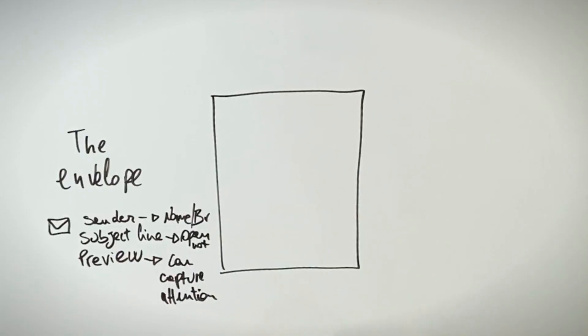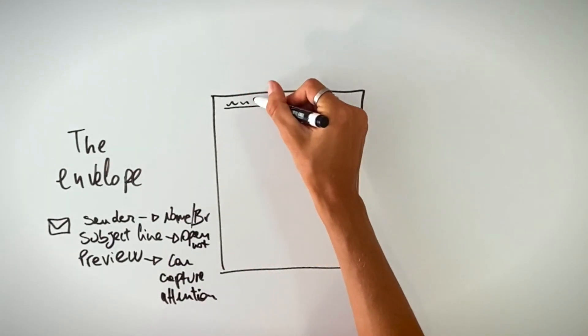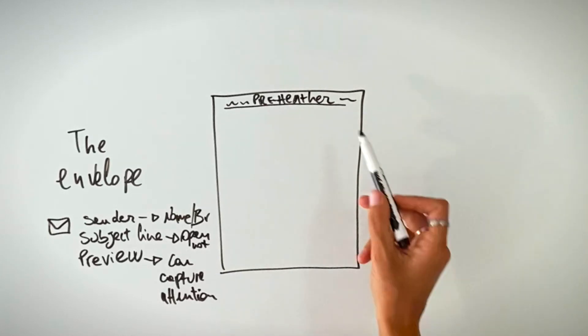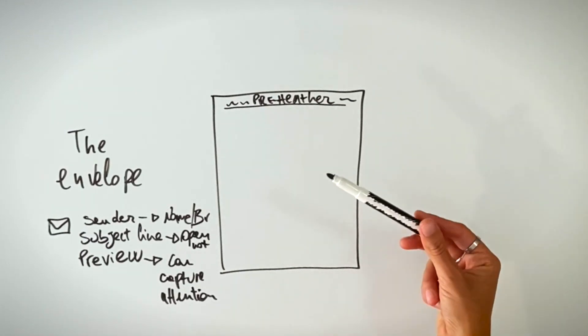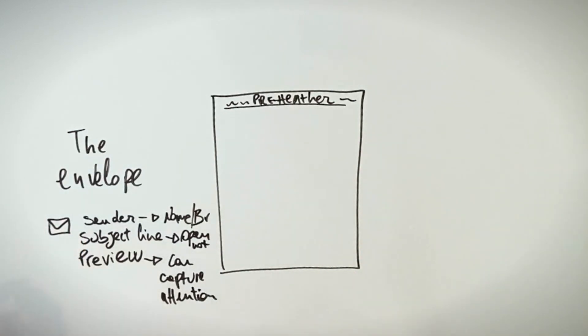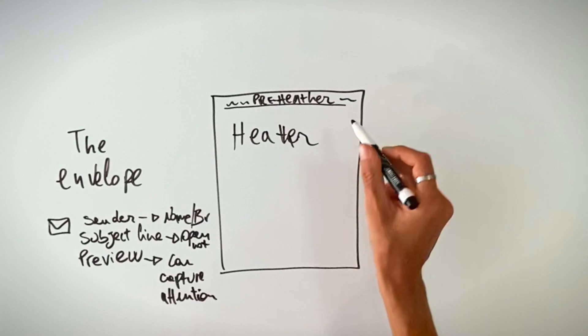Always remember: from now until the end of this lesson, testing is going to be the key. You're going to test what works best — A/B testing is a great option and you can do it really easily with GetResponse. The pre-header can show in the envelope, or you can insert it using HTML so it appears only in the envelope and not when they open the email. Then we have the header, which is usually the most important part of the email.